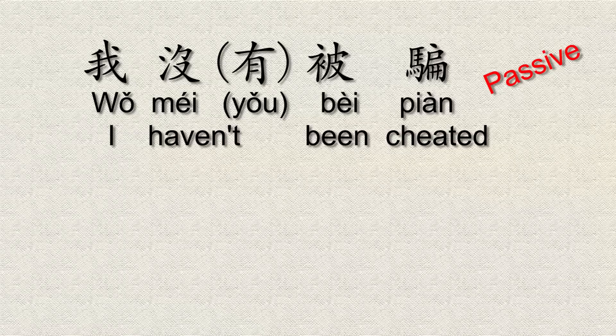被 can also be used in the negative to say that something hasn't happened. For example, 'I haven't been cheated.' In that case you use the word 没 (méi), which negates 有, indicating something has not happened in the past. You would say 'wǒ méi bèi piàn' — 'I haven't been cheated.' When it's in the negative, you always put the negative word before 被 — that's the rule.